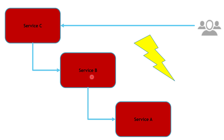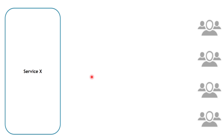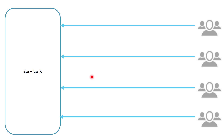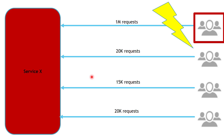Now let's talk about a different scenario. Let's assume we have a service — let's call it Service X — and we have different clients sending requests to Service X. However, one of these clients is sending an overwhelming number of requests to Service X, while other clients are sending a standard number of requests. What we are going to see is that Service X resources are going to be busy performing requests from this particular client, and it's going to affect Service X's availability to perform requests coming from other clients. This is the second scenario.